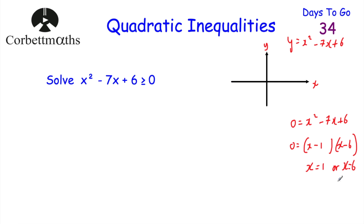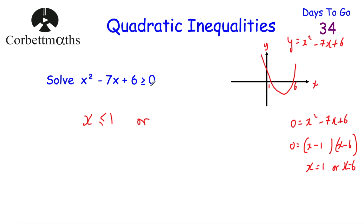The quadratic crosses the x axis at 1 and 6. We've been asked to solve x squared minus 7x plus 6 is greater than or equal to 0 — values of x that give either 0 or positive answers, i.e., where the graph is above or on the x axis. Any value between 1 and 6 gives a negative and doesn't work. But x equal to 1 or less than 1 works — so x is less than or equal to 1. On the right side, x equal to 6 or bigger than 6 works — so x is greater than or equal to 6. The solution is: x is less than or equal to 1, or x is greater than or equal to 6.